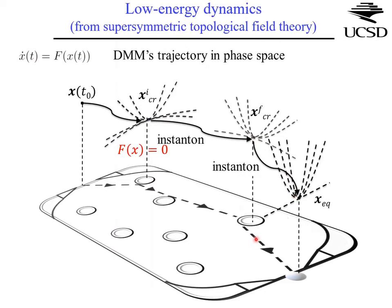Since these are dissipative systems, instantons can only connect critical points with fewer and fewer unstable directions. For example, a critical point with two unstable directions can connect to one with one unstable direction, but instantons cannot connect critical points with the same number of unstable directions. The anti-instanton solutions — the time-reversed paths — are exponentially suppressed, so the low-energy dynamics proceeds through a succession of instantons, like a ball in a pinball machine, from one critical point to the next.